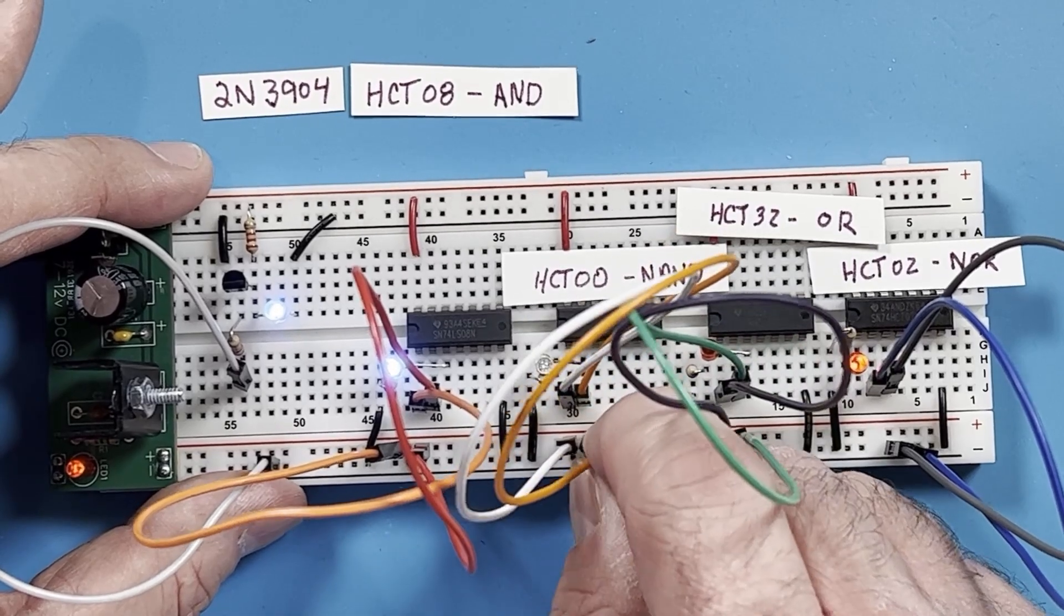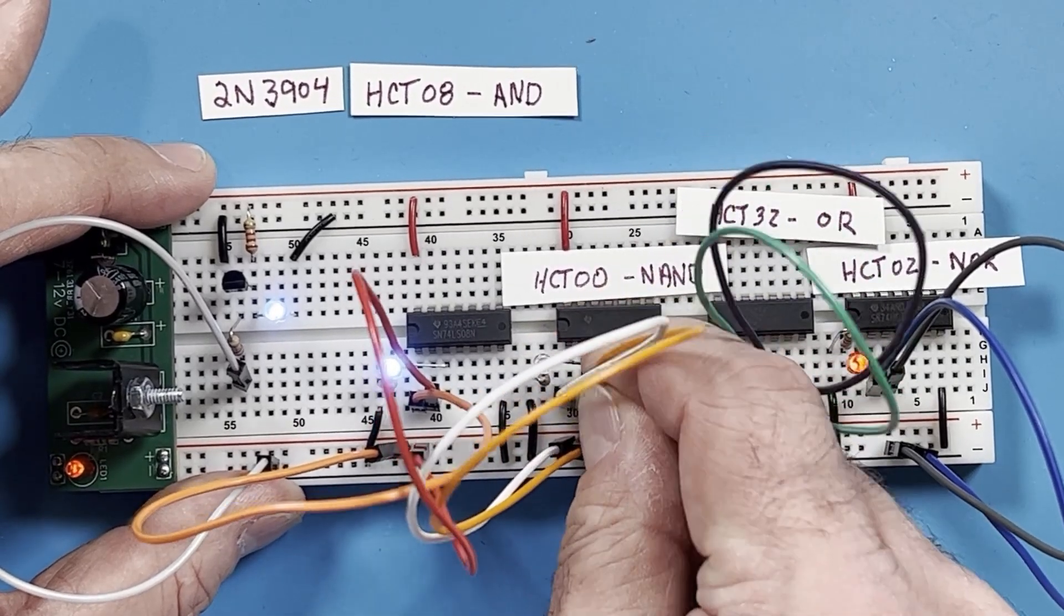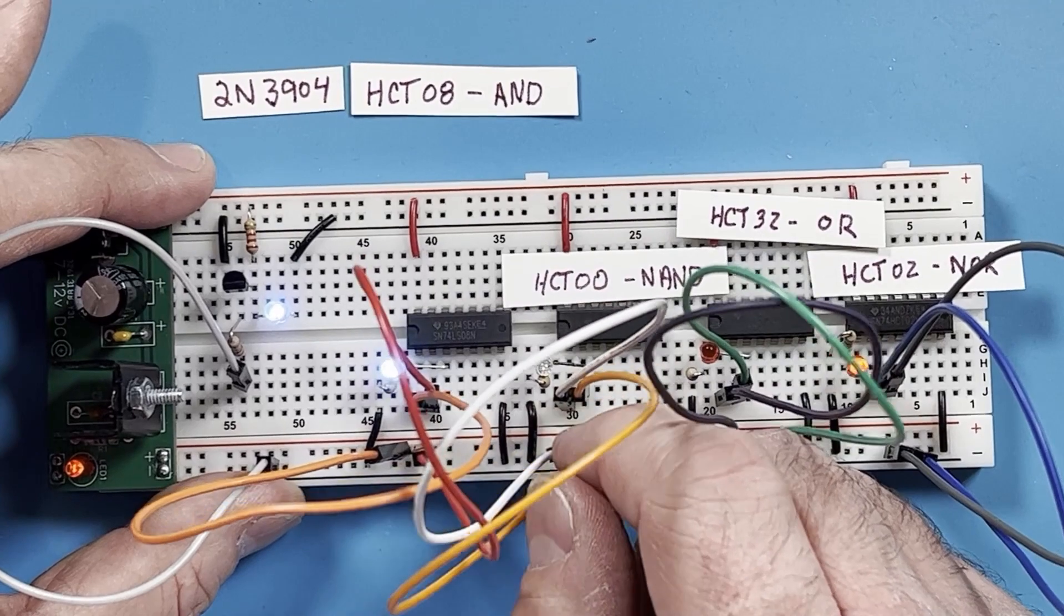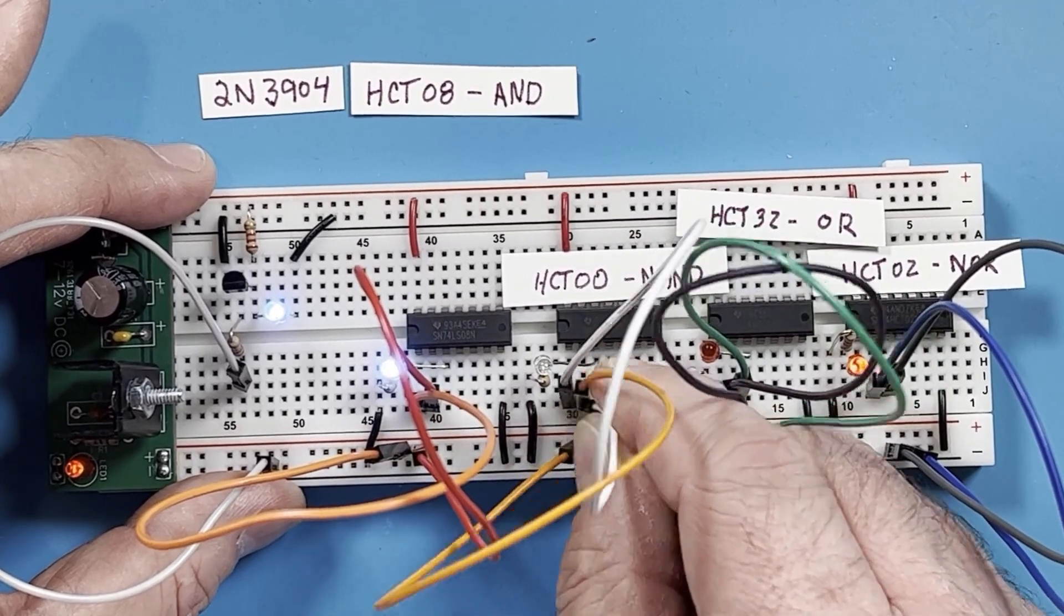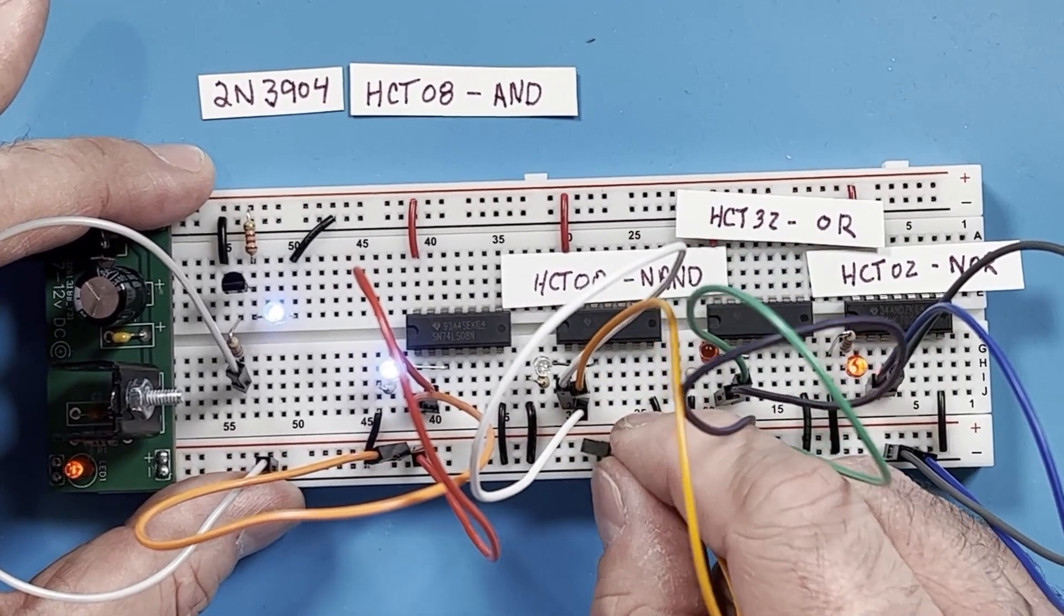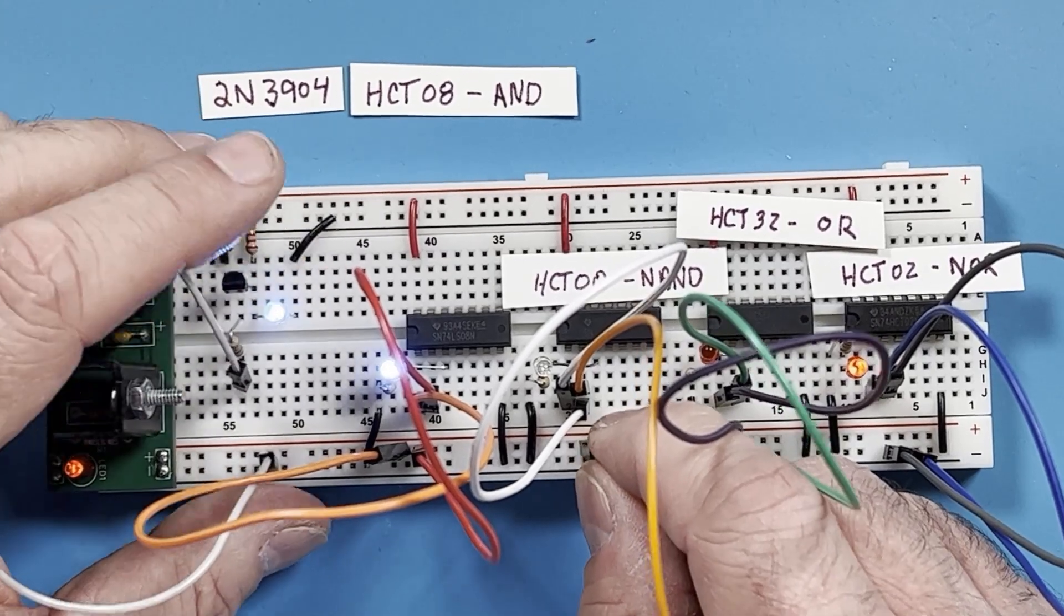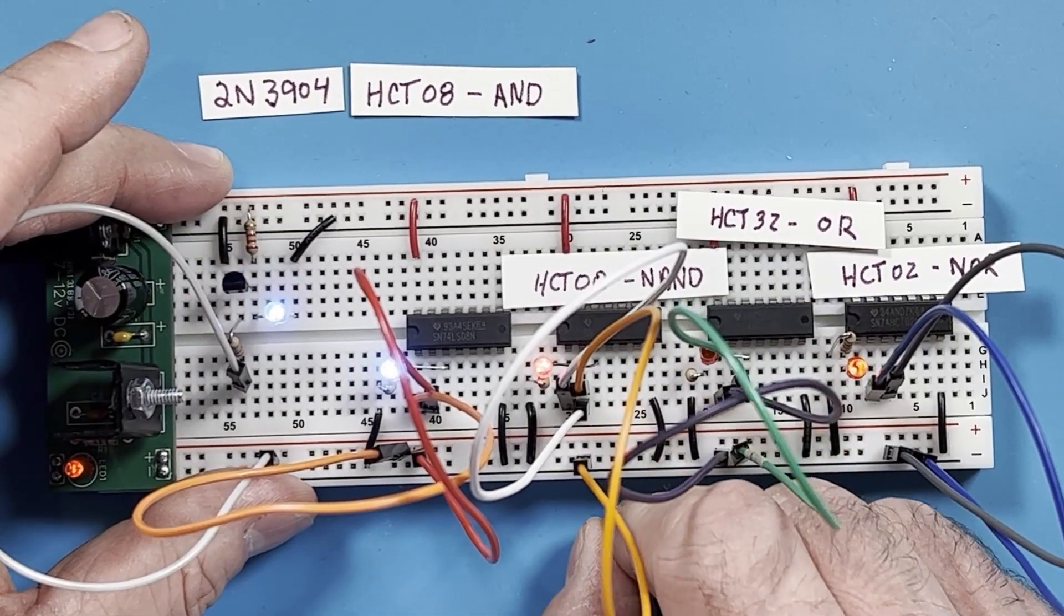The other interesting thing about a NAND gate is that it can be used as an inverter if needed. If you tie the two inputs together, then the input pins will either be both high or both low. As you saw earlier, if both inputs are high, the output goes low, and if they're both low, the output goes high.